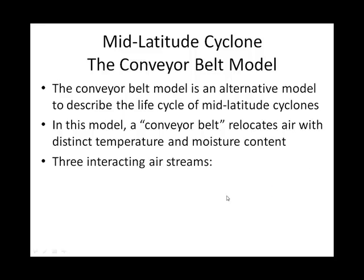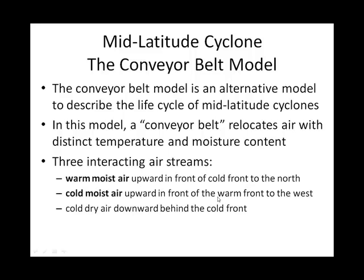You're going to see a cold front and a warm front, and you can see where we can ultimately get an occluded front out of these three air masses interacting with each other. The conveyor belt model — if you think of what a conveyor belt is, it basically relocates material within a factory.